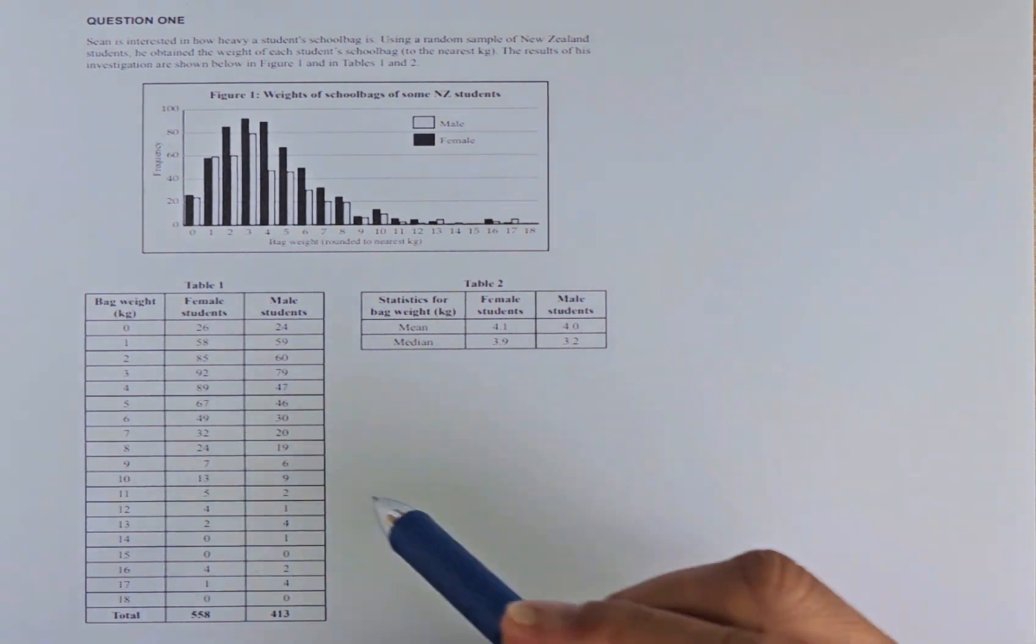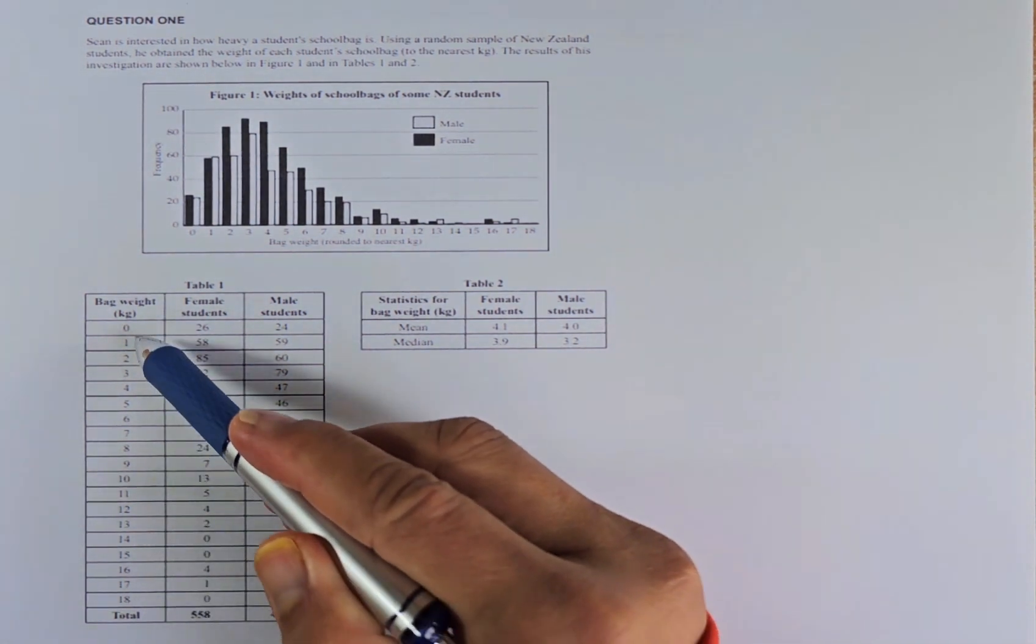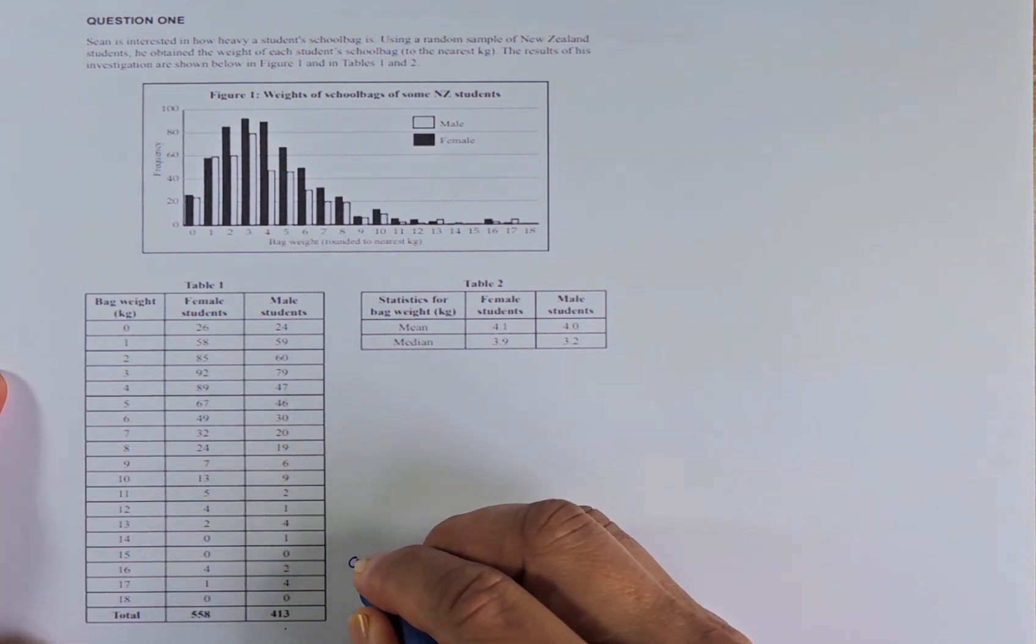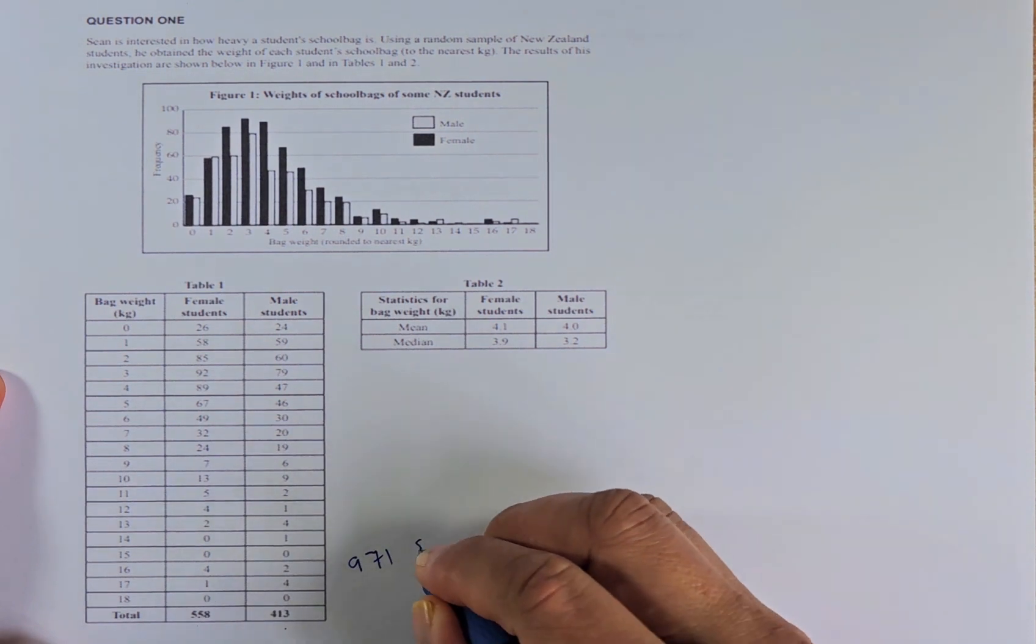When you look at Table 1, there are the bag weights in kilograms from 0 to 18 kg. There are female students as well as male students: 558 female and 413 male. The first thing we need to know is the total number of students in the sample. So we're going to add 558 plus 413, and I calculated 971 students in total.